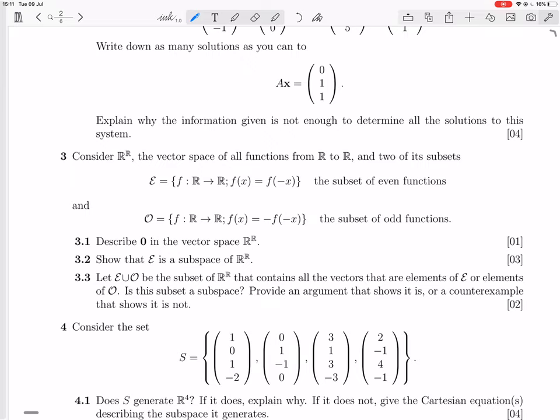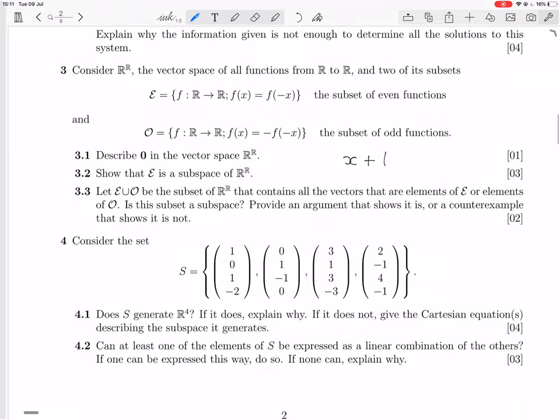So a nice, simple odd function would be the function x, and a nice, simple even function would be the function 1, and x plus 1, that's neither even nor odd, so it's not in there. So that's going to be the example.